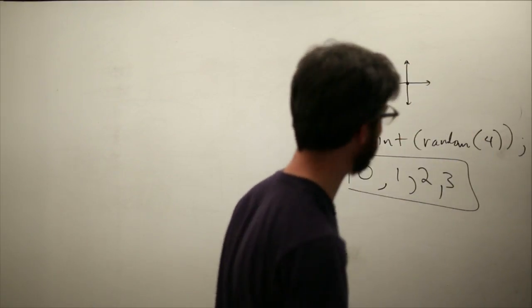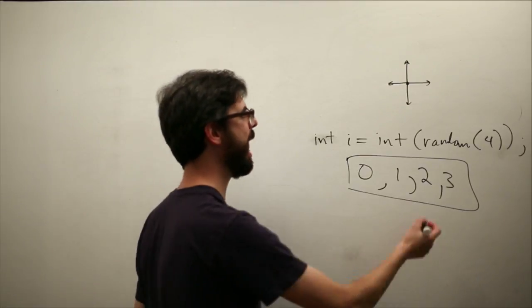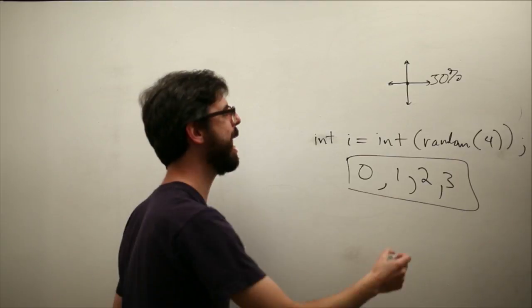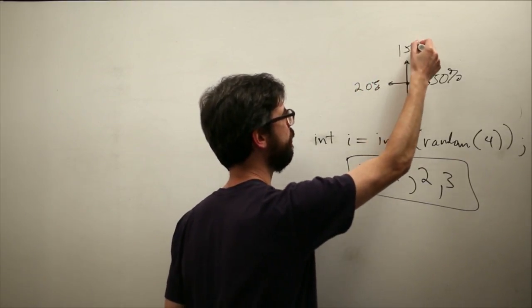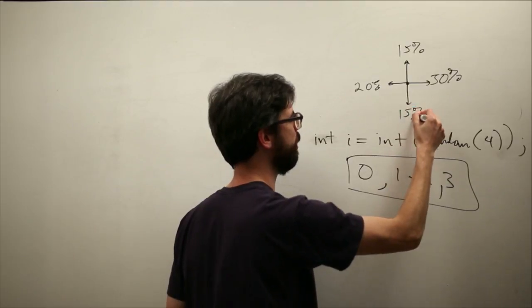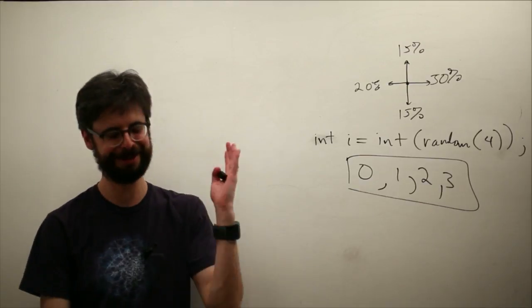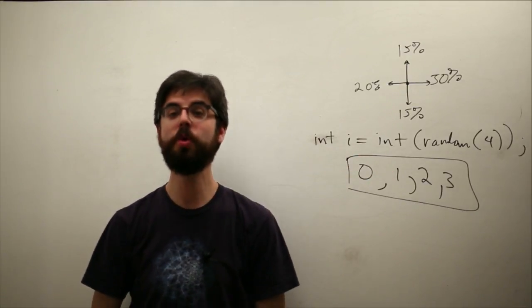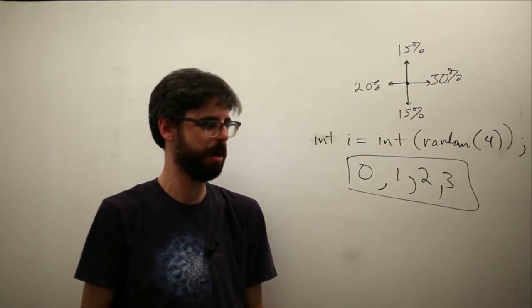What if we wanted to say that our random walker has actually a 50% chance of moving to the right, and it has a 20% chance of moving to the left, a 15% chance of moving up, and a 15% chance of moving down. These could, I hope that adds up to 100, it does. How could we implement something like this in processing? We need to figure out how to have custom distributions of random numbers.